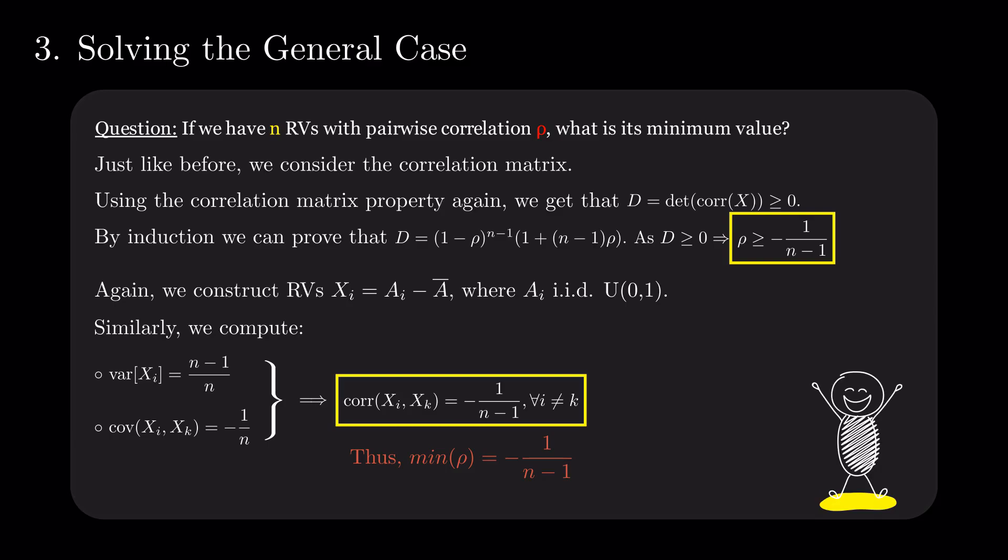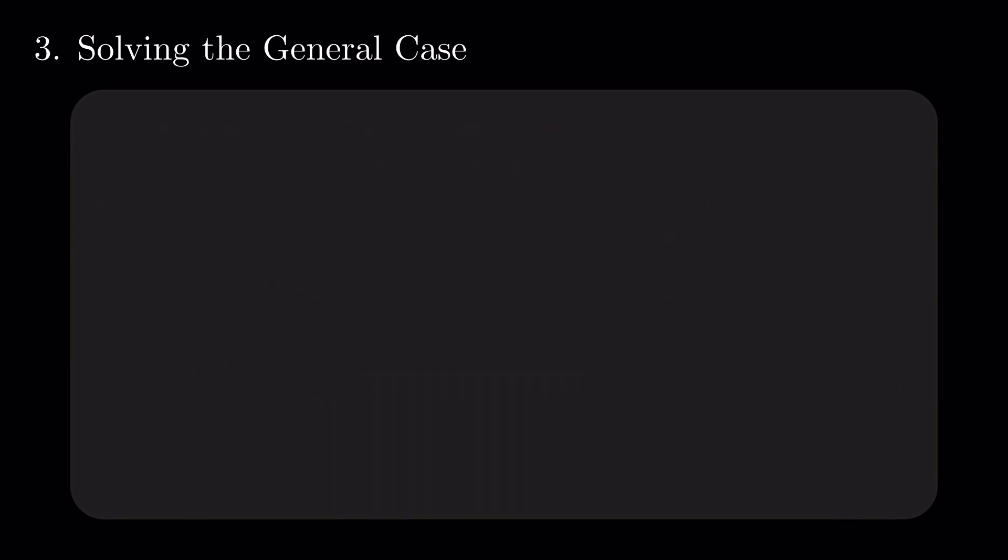This generalization is consistent with our results for n equals 3. At the same time, we can see that the value of the minimal correlation converges to 0 when n goes to infinity. This aligns with the natural idea that adding more random variables to a set will increase the minimum correlation.